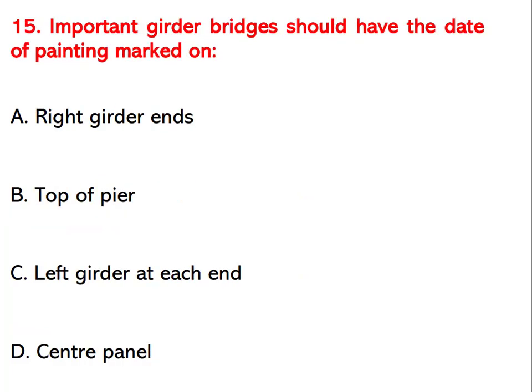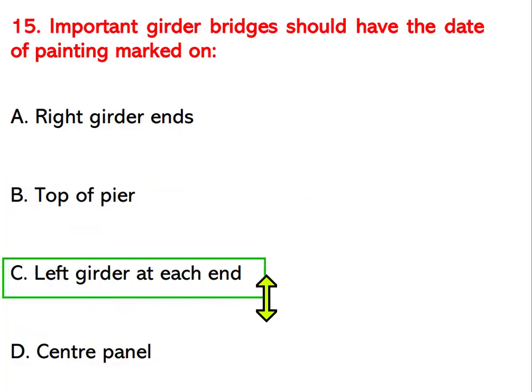Important girder bridges should have the date of painting marked on which location? Options are right girder ends, top of pier, left girder at each end, or center panel. The right answer is left girder at each end.